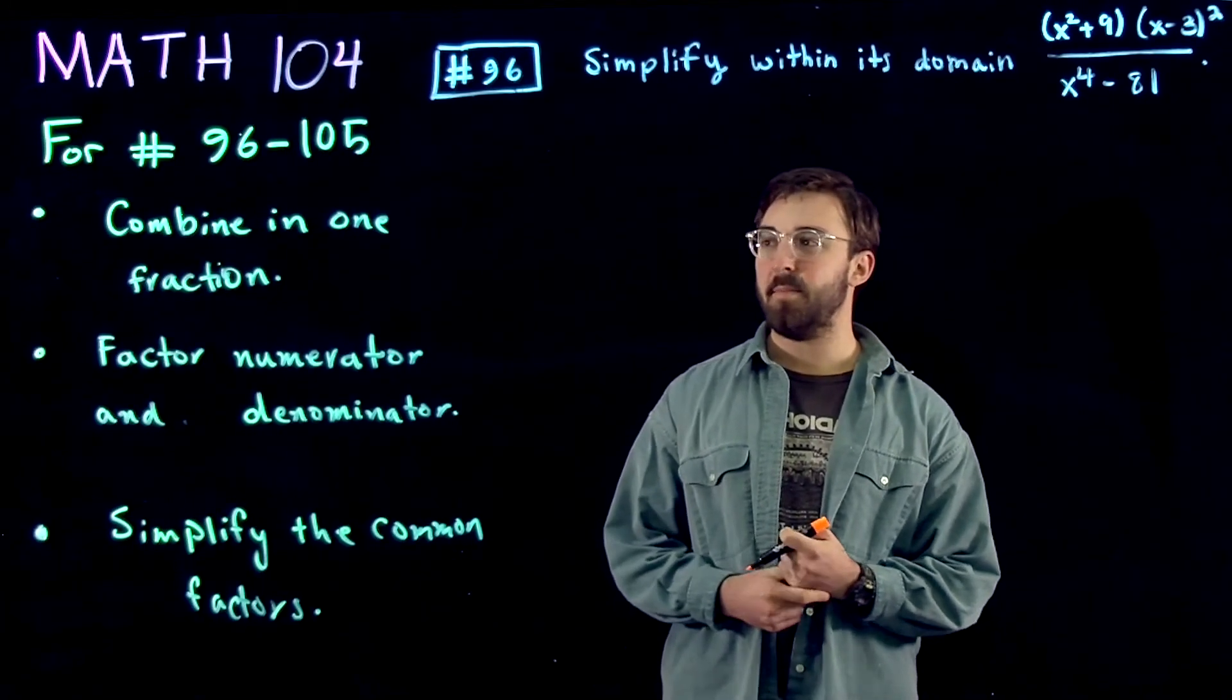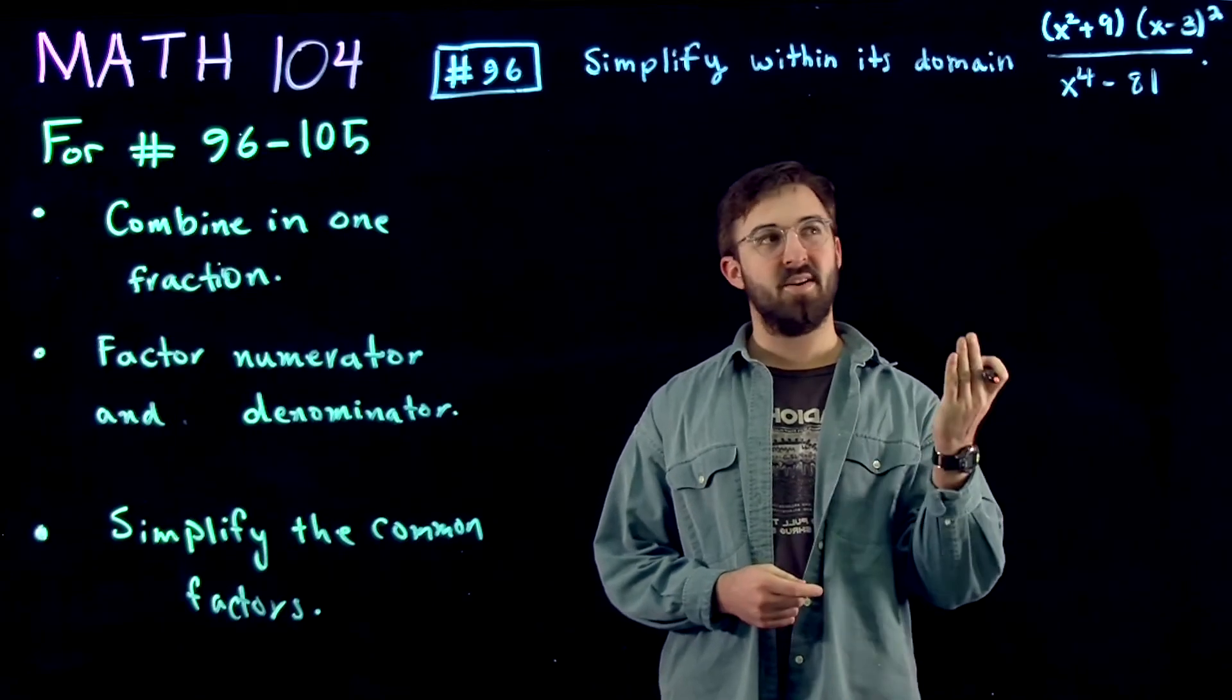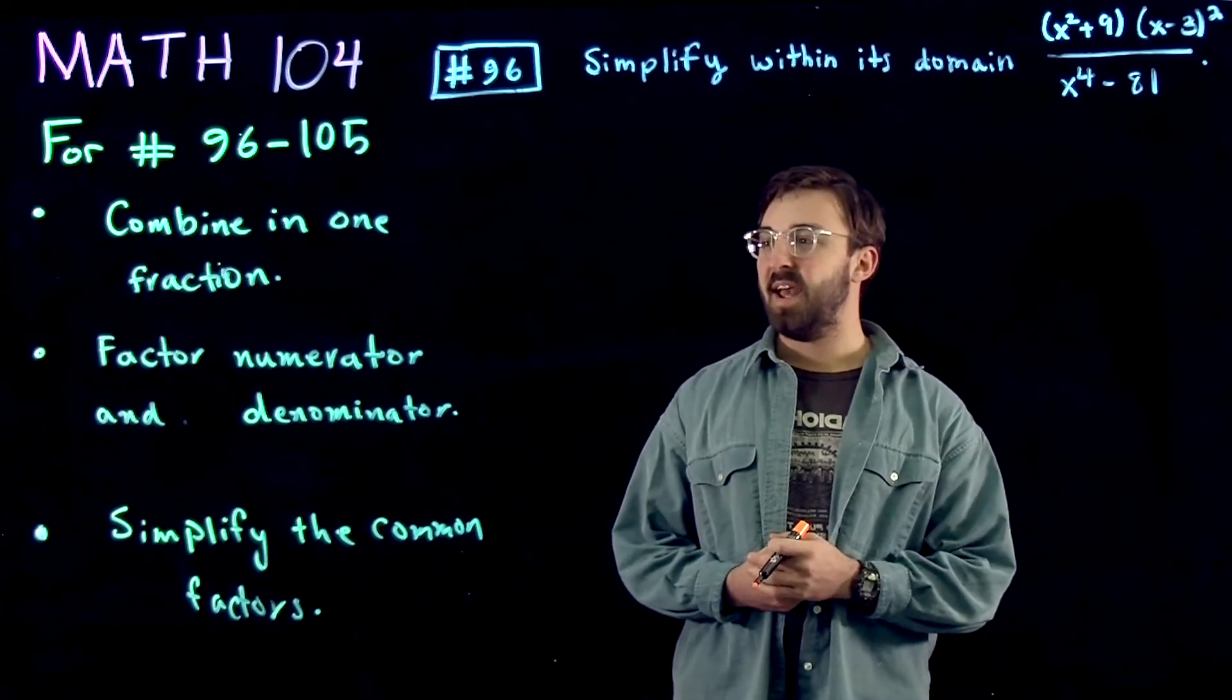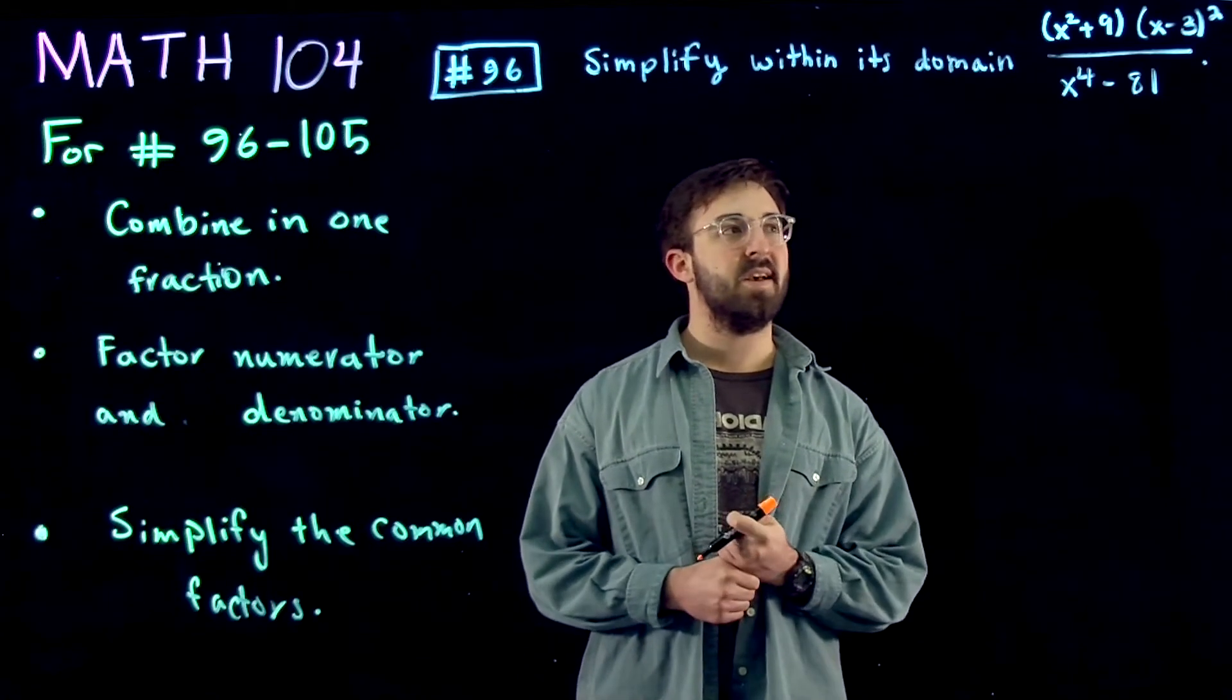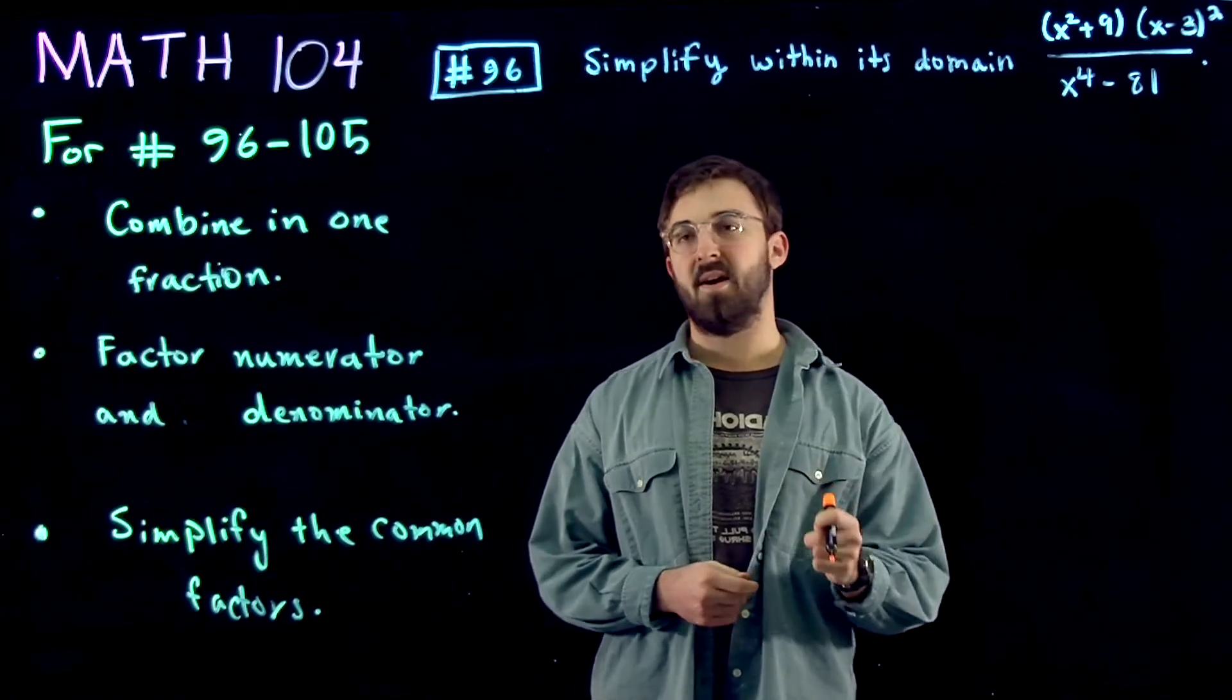So the first step is to combine these into one fraction. As you can see, it's already in one fraction. And then we're going to factor the numerator and the denominator. So the numerator is completely factored, and the denominator is what we need to figure out here.